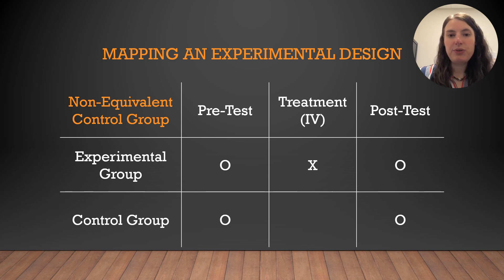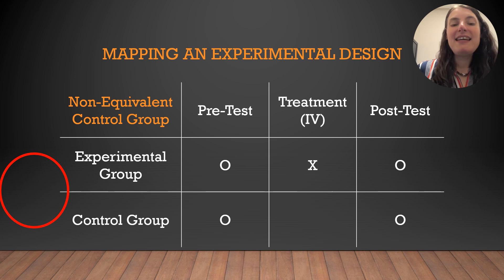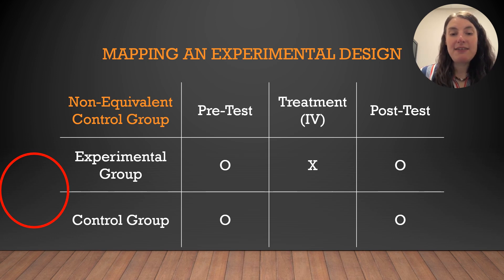First up, the non-equivalent control group. This is the experimental map for the design — it looks pretty familiar. The non-equivalent control group design does not use random assignment, so it's missing a capitalized R on the left of the experimental design map. The lack of random assignment means that the experimental and control groups likely start out as different from one another, which makes all comparisons between the two groups more suspect.